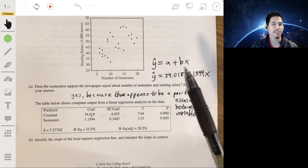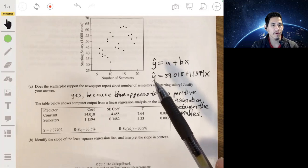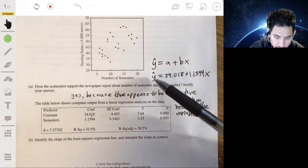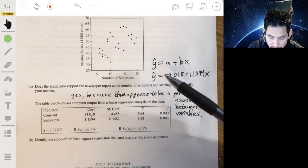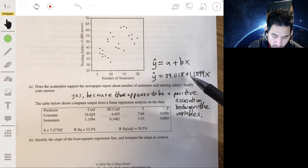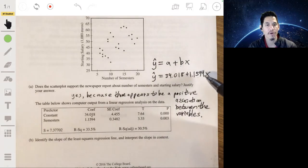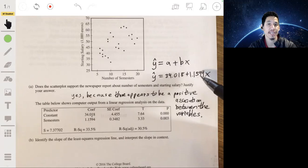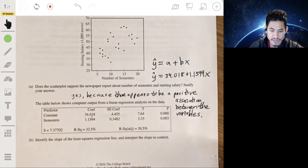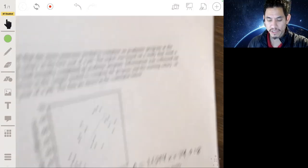Now, in this case, the A is our constant. So the A would be that 34.018. And then the B or the slope would be that 1.594. So we would write this as Y hat being equal to 34.018 plus 1.594 X. Now, what does this mean in context of the problem? Well, essentially this is saying that the predicted Y value or the predicted starting salary is expected to increase by an average of 1,594 euros for each additional semester that a graduate takes at the university.